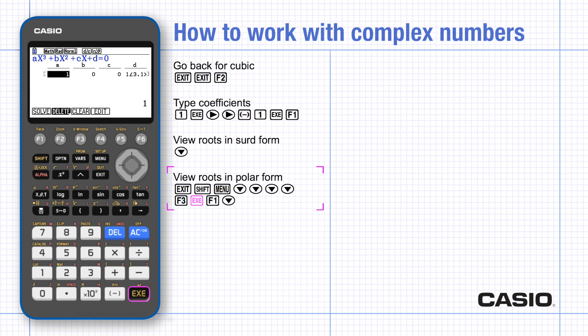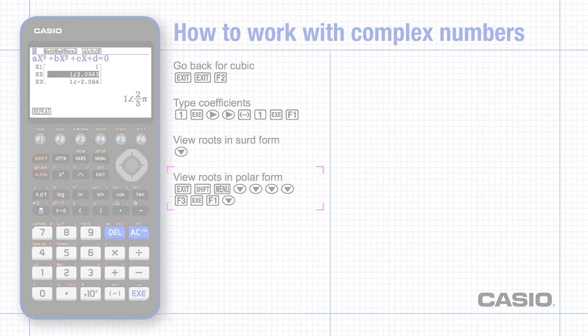Notice here that the angle setting is in radians, and you can move the cursor down to see the argument as a multiple of pi.